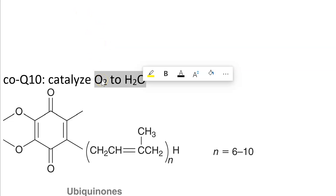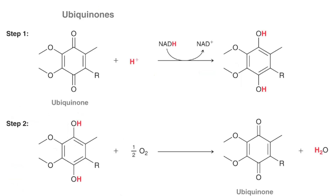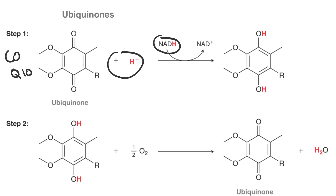So that's actually using oxygen as an oxidizing agent. In the first step of this process, we take a ubiquinone like CoQ10 and react it under acidic conditions, using NADH as our hydride donor, and that gives us NAD+.